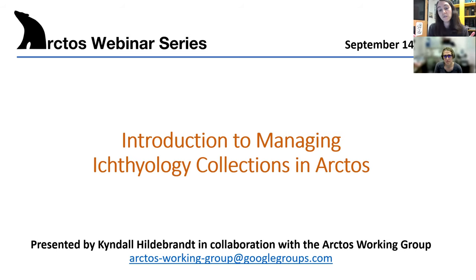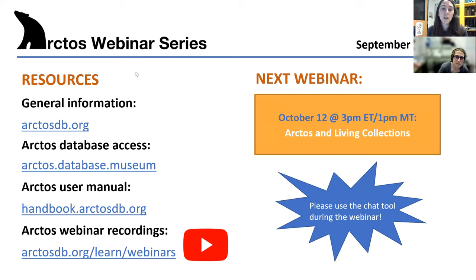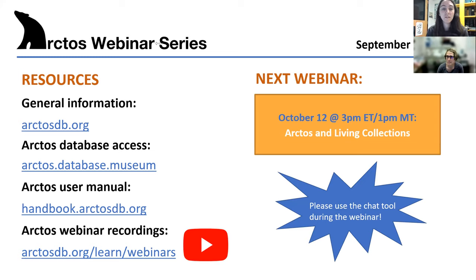She will be giving us an overview of Arctos, especially some of the major functions and features available to fish collections. We'll be using some of the UAM specimen records as examples, both specimen and observation records. Before we get started, I wanted to point out a couple of resources to those of you who are new to Arctos. First on the list is our website, arctosedb.org, which is a good starting place if you want to learn more about Arctos.